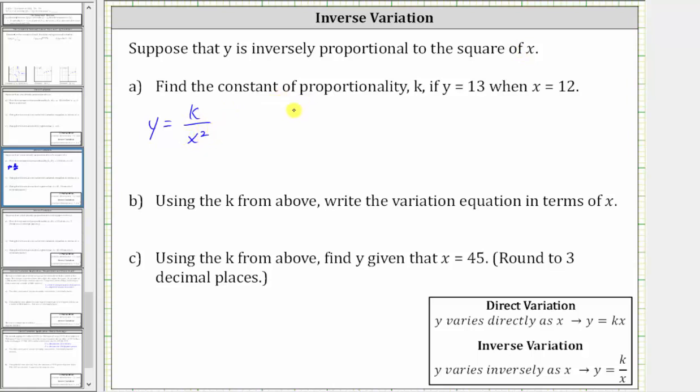For part a, we're asked to find the constant of proportionality k if y equals 13 when x equals 12. So to find k, we substitute 13 for y and 12 for x.